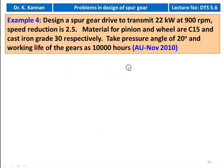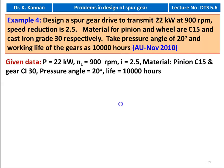Example number 4 from the November 2010 question paper. Design a spur gear drive to transmit 22 kilowatts at 900 RPM. Speed reduction ratio i = 2.5. Material for the pinion is C15 and for the wheel (gear) is cast iron grade 30. Pressure angle = 20°, working life = 10,000 hours. Given data: P = 22 kW, N1 = 900 RPM, i = 2.5, pinion material = C15, gear material = CI grade 30, pressure angle = 20°, life = 10,000 hours.